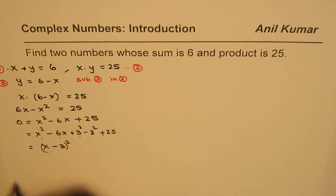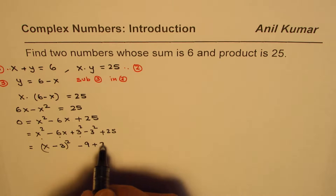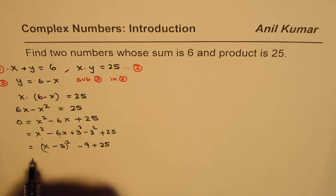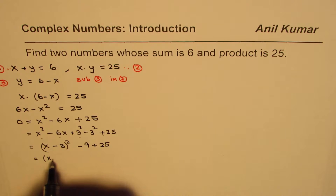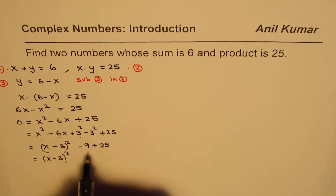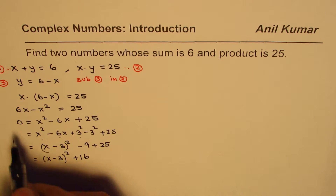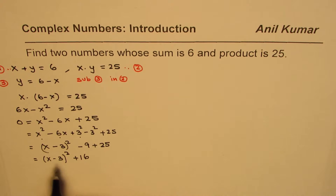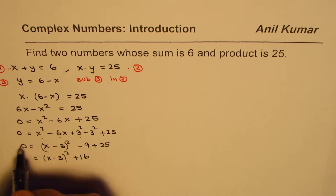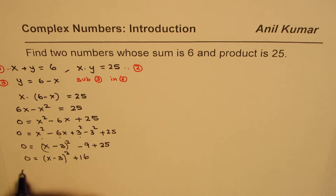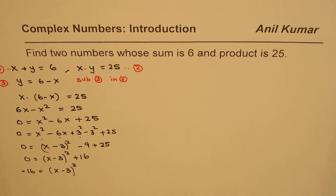The first three terms form a perfect square: (x minus 3)². Then we have minus 9 plus 25, which gives (x minus 3)² plus 16 equals 0. Taking 16 to the left side gives minus 16 equals (x minus 3)².